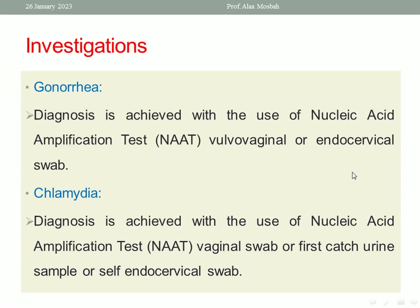What about the investigations for sexually transmitted infections? For gonorrhea, we take a high vaginal swab, vulvovaginal swab, or endocervical swab, and use nucleic acid amplification test (NAAT). Even with a very small sample, NAAT can detect the organism. For chlamydia, diagnosis is also achieved with NAAT using a vaginal swab, first-catch urine sample, or self-obtained endocervical swab.